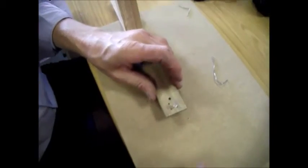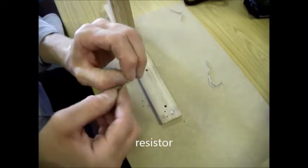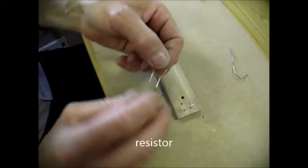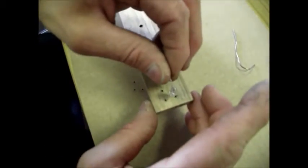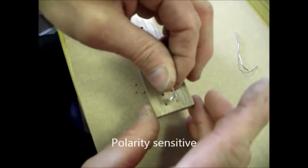Take the resistor and make a sort of a U shape out of it, like that. And then it doesn't matter which way around that goes. The LED is polarity sensitive and the resistor isn't.